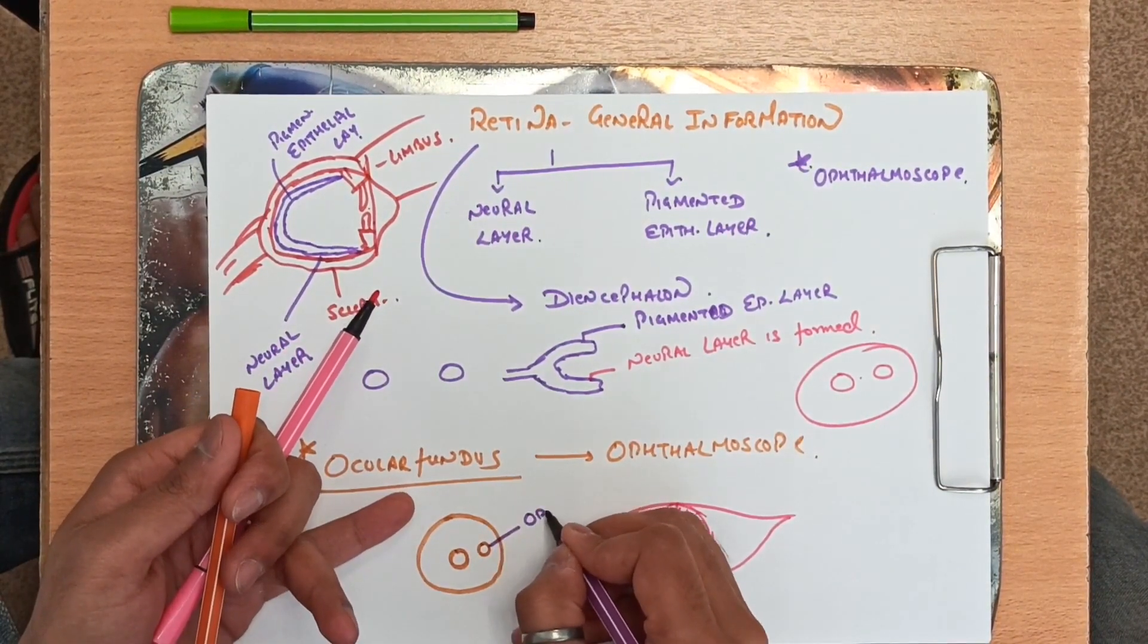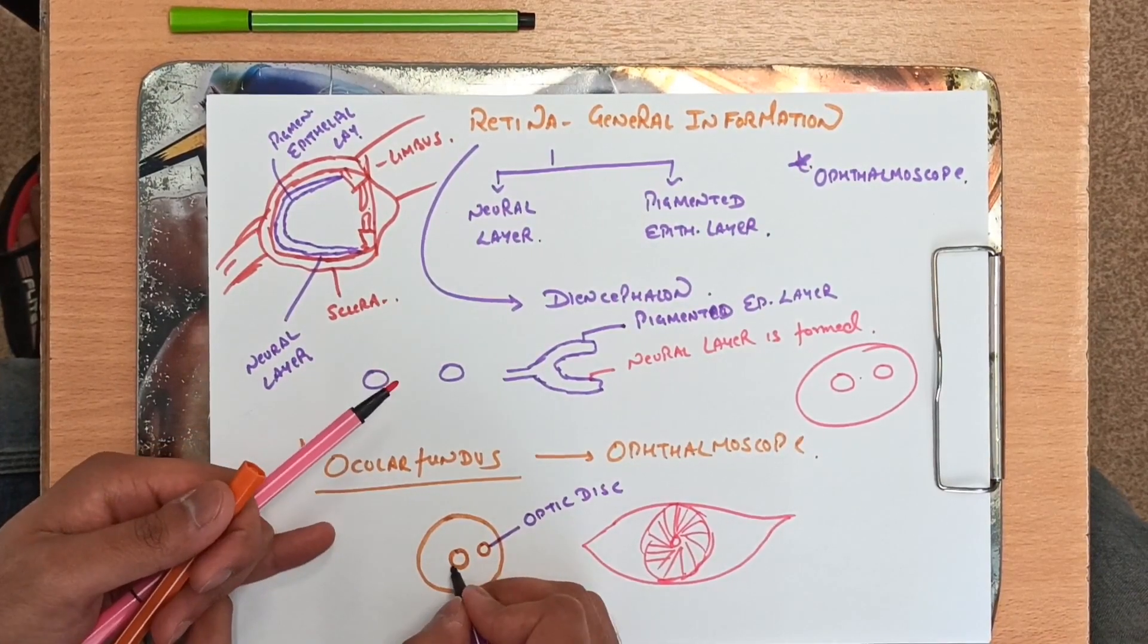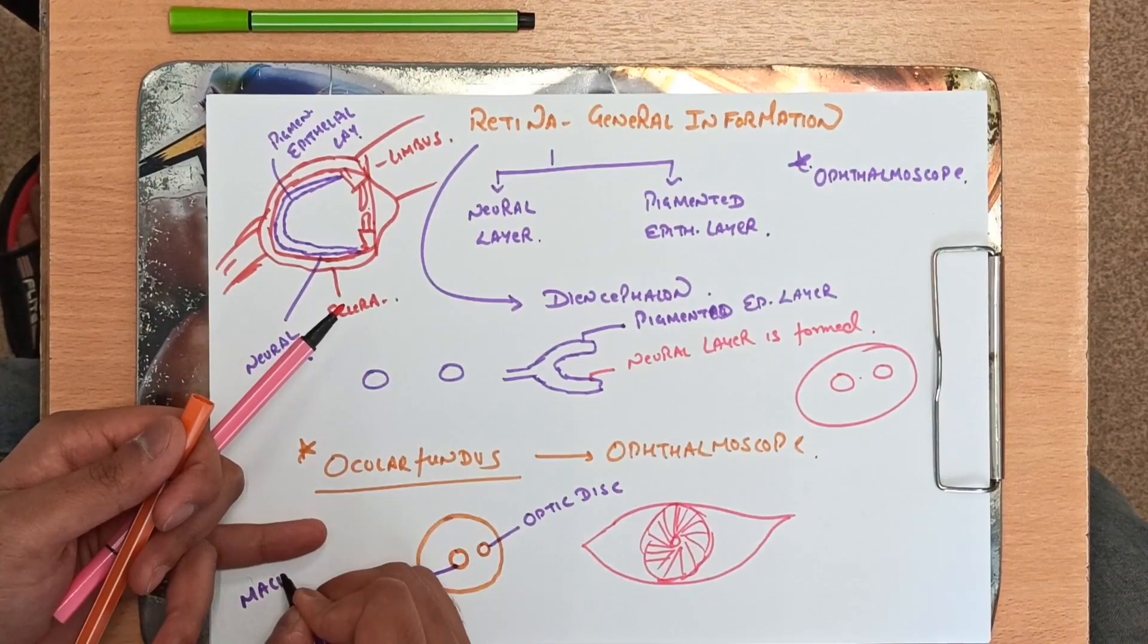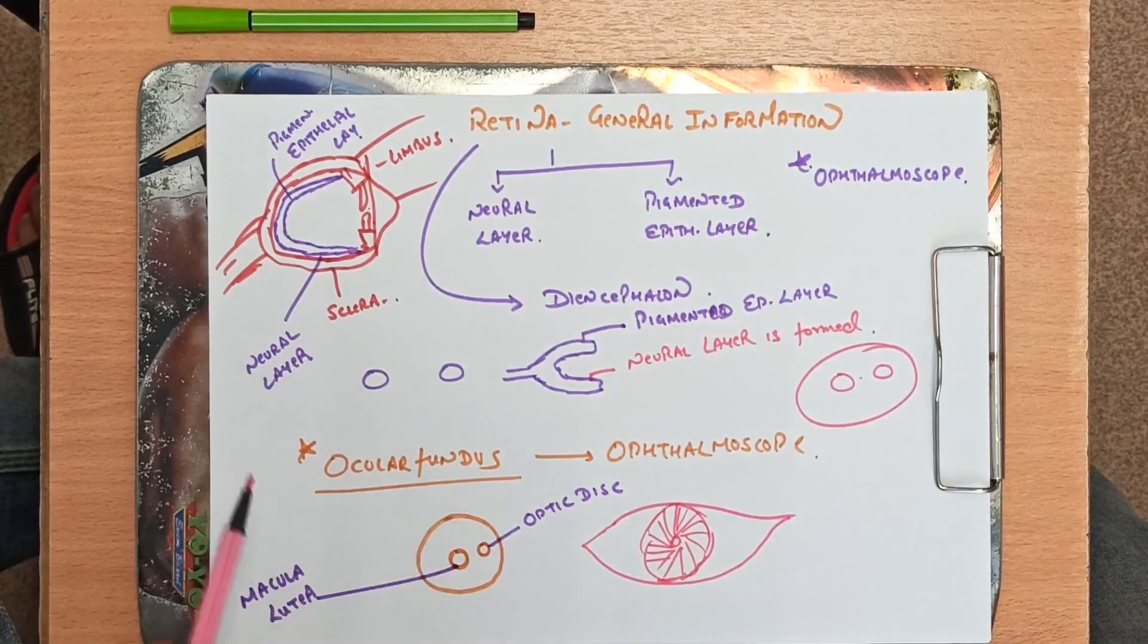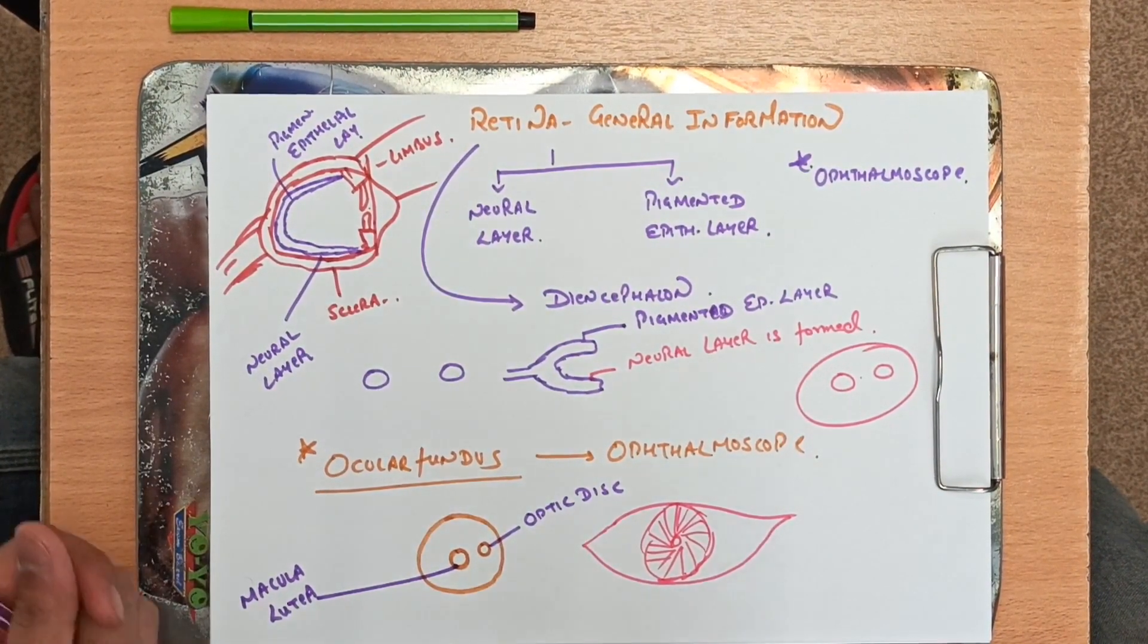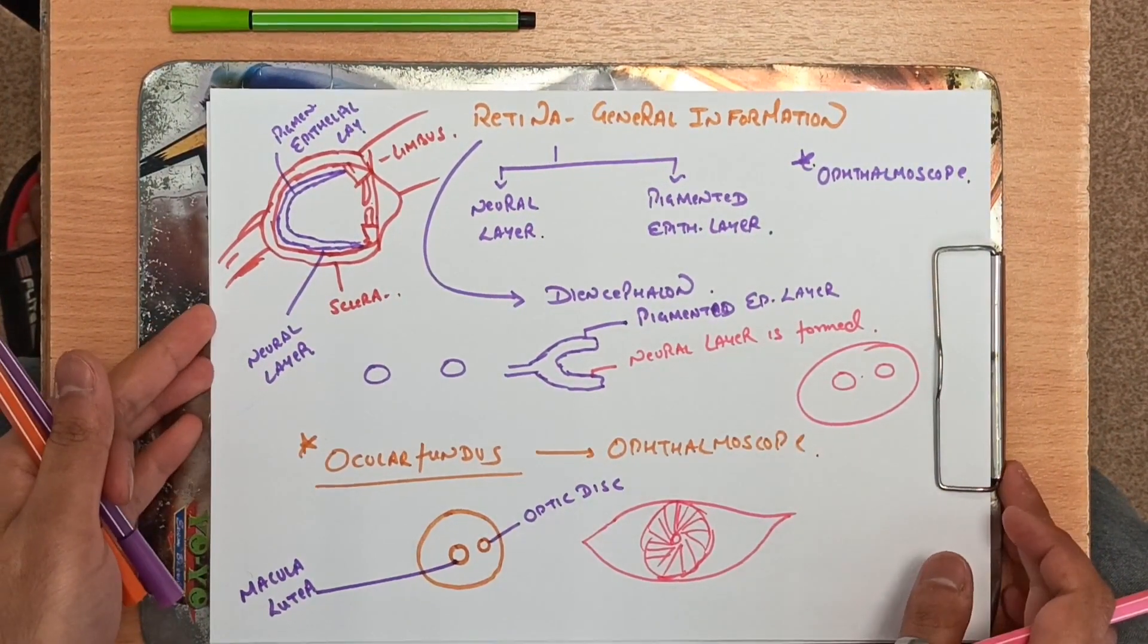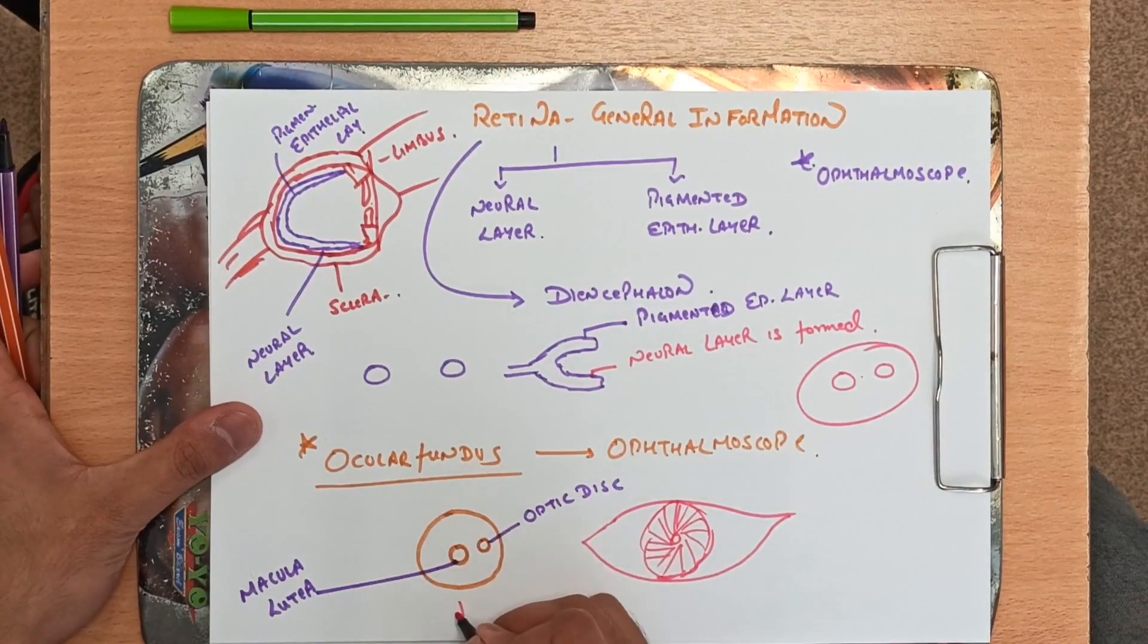This medial structure is called the optic disc and this part is called macula lutea. Now in our school days we have studied that there is a part in the retina which has the highest precise activity for image formation called the fovea centralis.